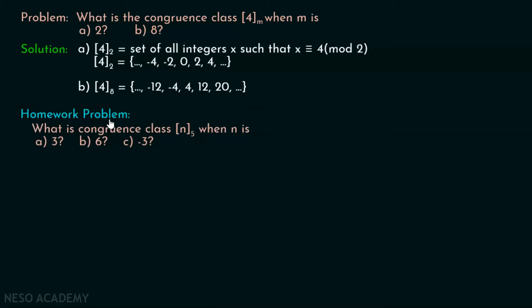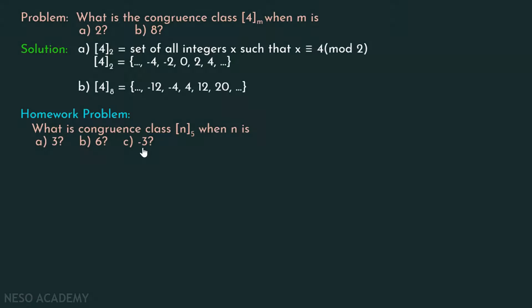Here is one homework problem for you: what is the congruence class [n]_5 when n is 3, 6, and minus 3? You can always post your answers in the comment section below. Thank you for watching this presentation.